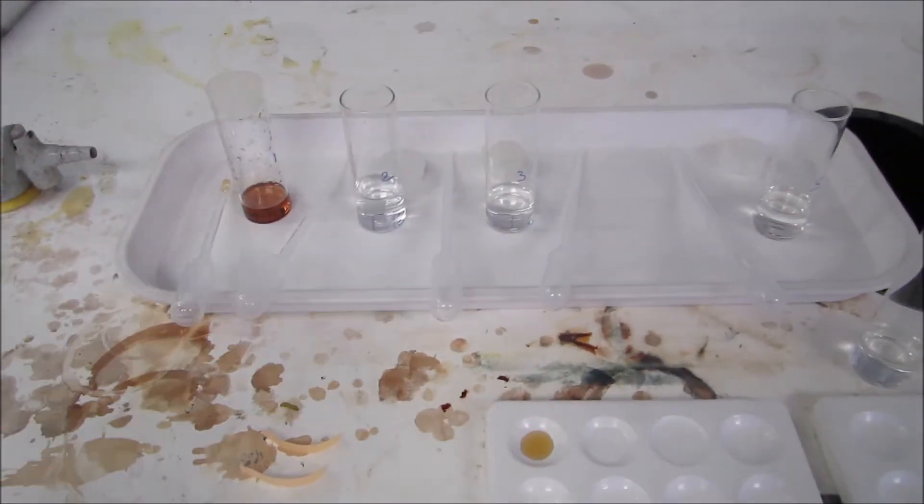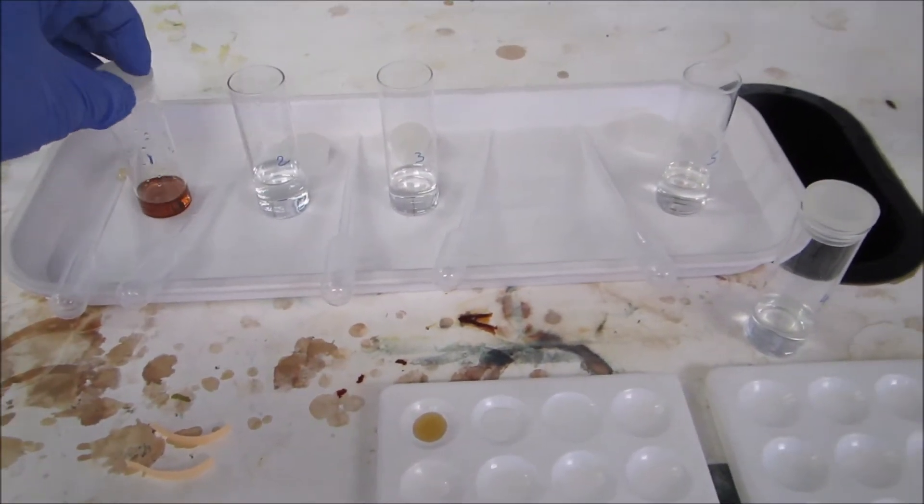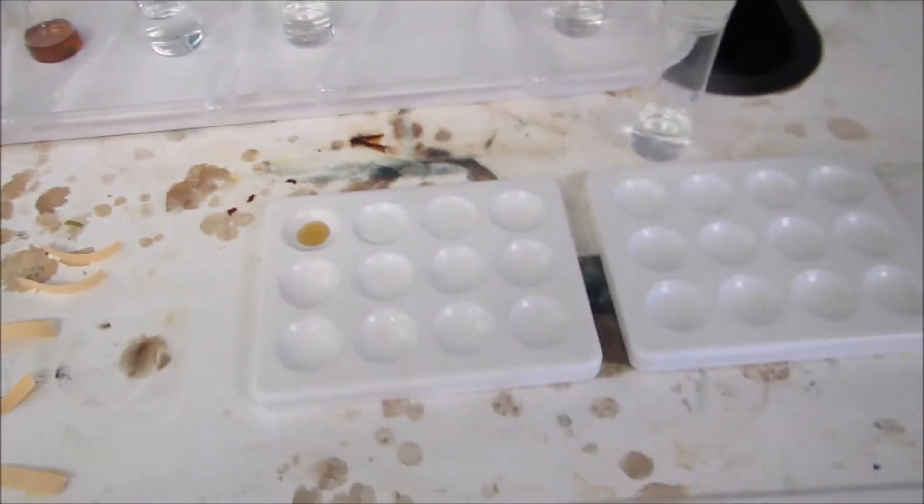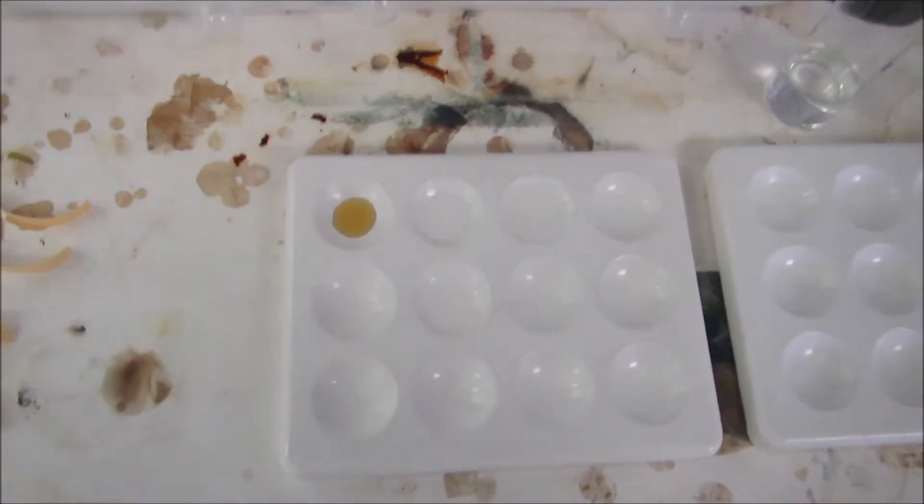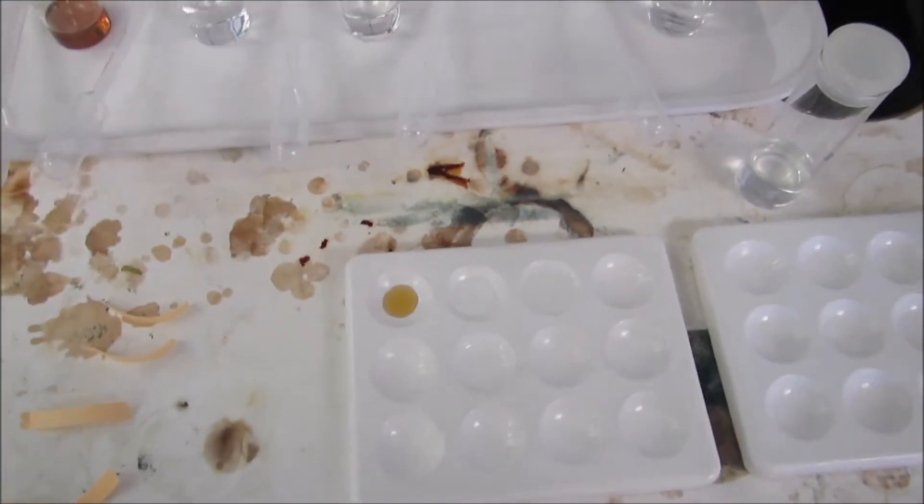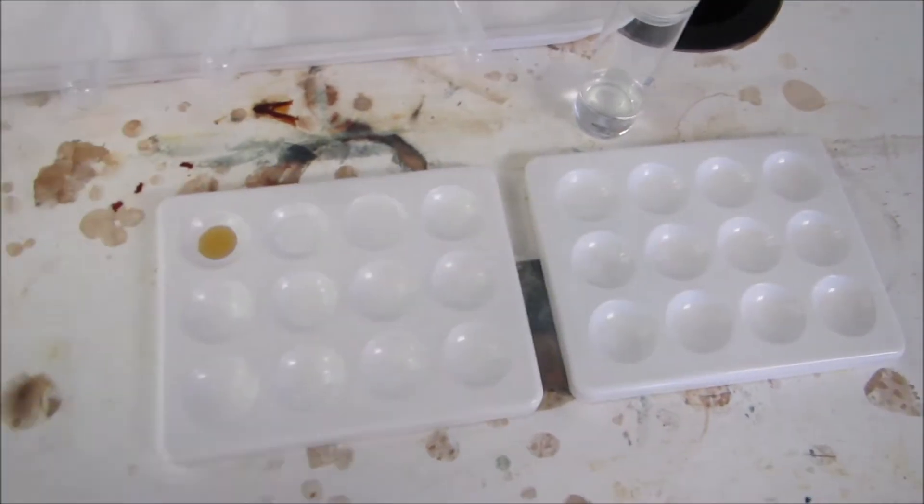So I now have five unknowns that I'm going to perform organic tests on, and you can try and work out what they are. I've put some of all of them into the spotting tile.